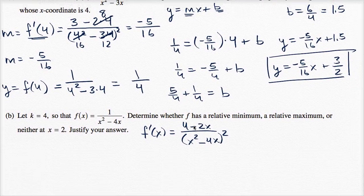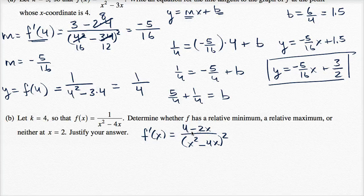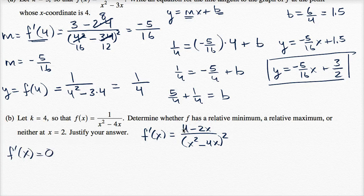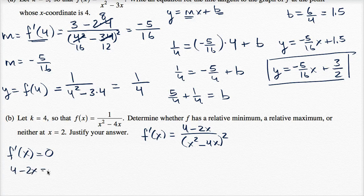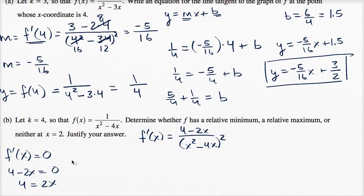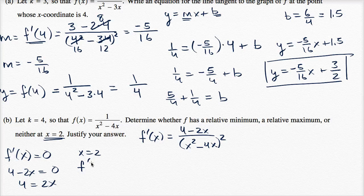If we were looking for relative minima or relative maxima, we would be interested in the critical points, and especially where f prime of x is equal to zero. So when does this numerator equal zero? When does four minus two x equal zero? You add two x to both sides, you get four is equal to two x, or x is equal to two. We've confirmed that f prime of two does indeed equal zero. So this is definitely an interesting point.